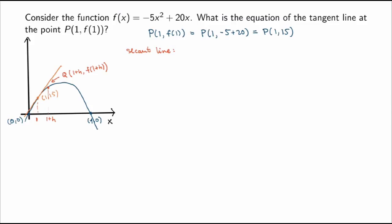The slope of the secant line is the difference in y over the difference in x: [f(1 + h) - f(1)] / [(1 + h) - 1] = [f(1 + h) - f(1)] / h. Substituting the function, I get [-5(1 + h)² + 20(1 + h)] minus the value at x = 1, which is -5 + 20, all divided by h.